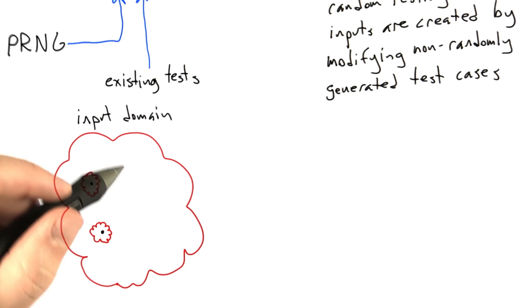One thing that you should be asking yourself right now is what are the operators that we use to mutate test cases to create new random test cases, and so let's look at that a little bit.